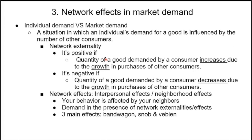Network effects arise when an individual's demand is influenced by the number of other consumers. We think about network externalities: if a network externality is positive, the quantity of a good demanded by a consumer increases due to the growth in purchases by other consumers. Network effects include interpersonal effects and neighborhood effects — your behavior is affected by your neighbors. There are three main effects: the bandwagon, the snob, and the Veblen effect. These are network externalities — changes not related to price or quantity in the market itself, but which still affect demand.